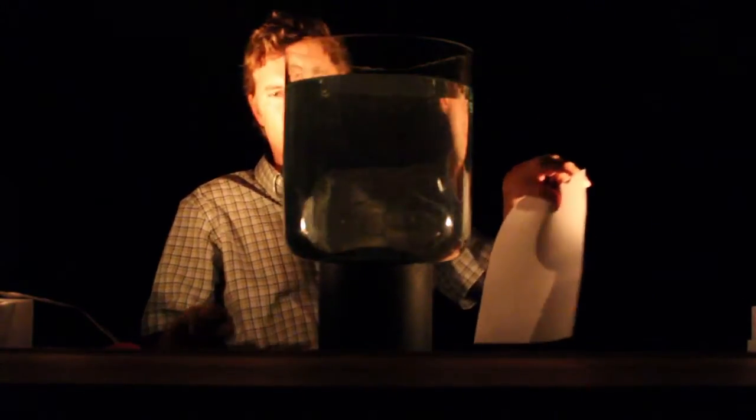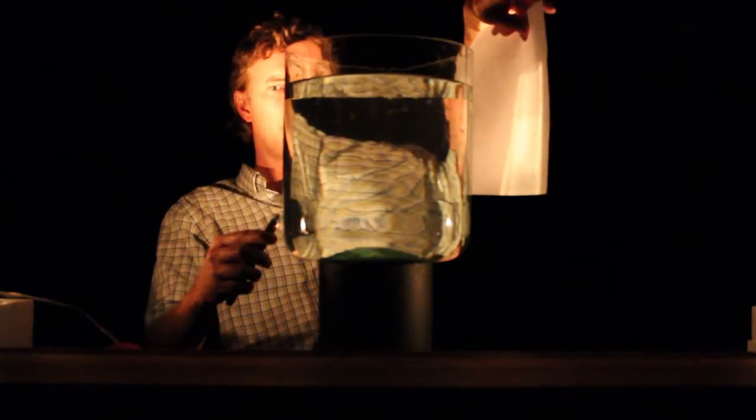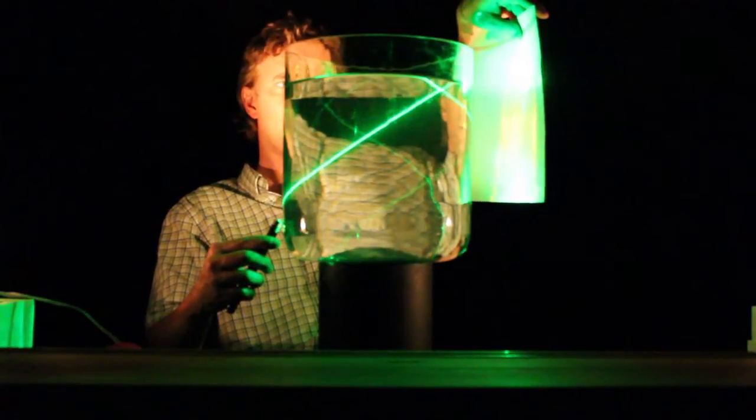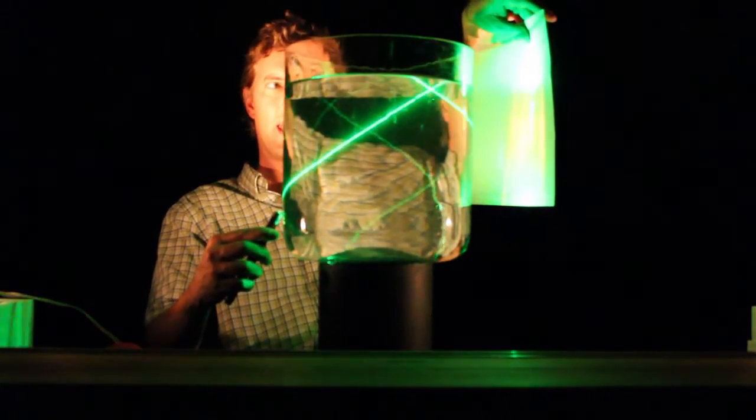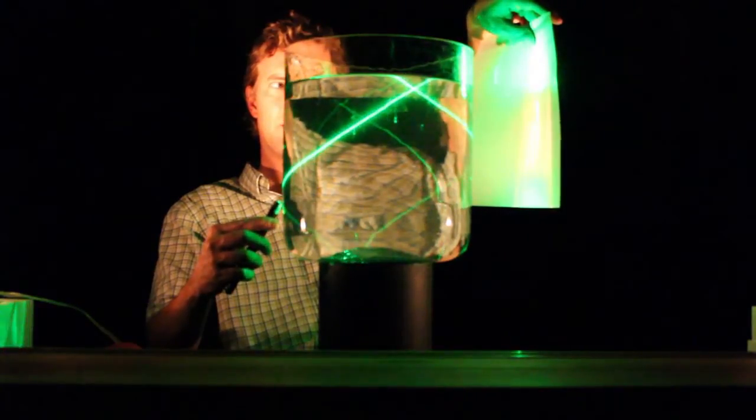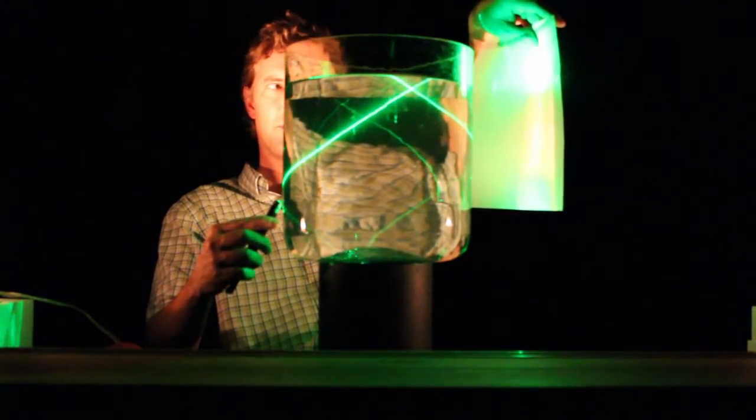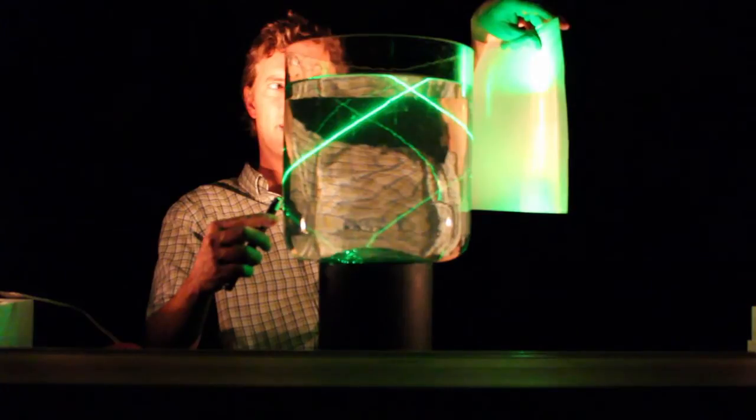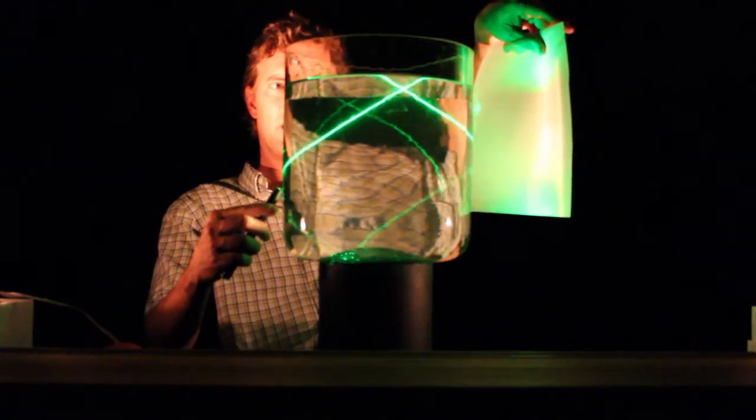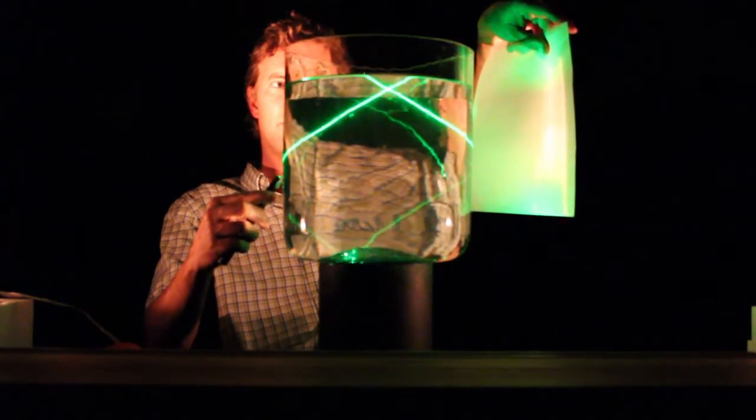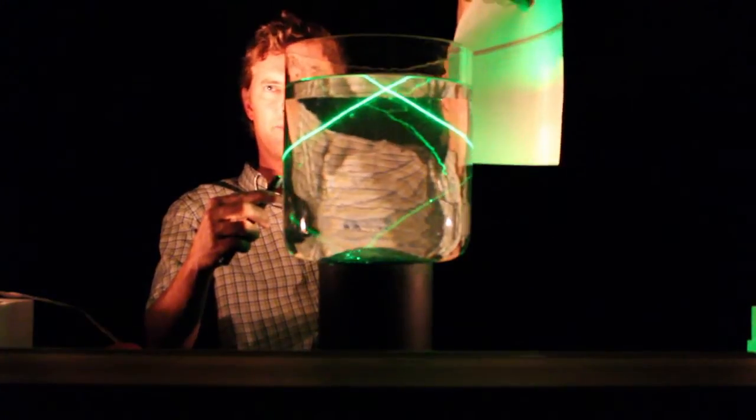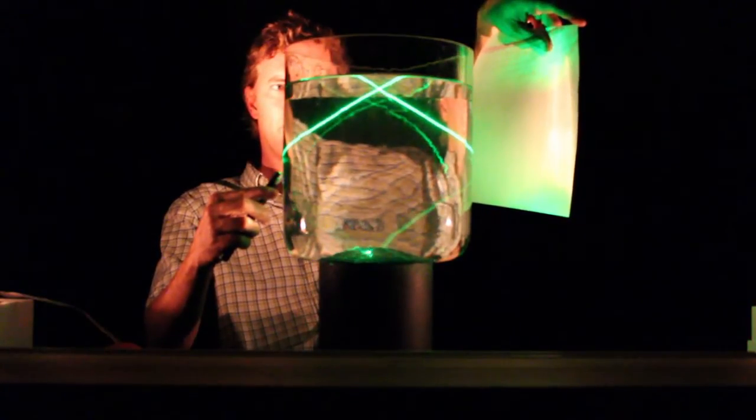You can do the same thing for the other colors. There is green. Green is exiting the water. And as we increase this angle, that transmitted spot is lowering and lowering and finally it just hits the edge where it is no longer transmitting. It is all totally internally reflecting.